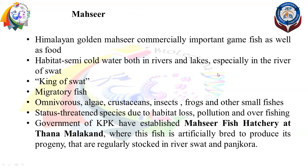Mahseer — Himalayan Golden Mahseer — is the national fish of Pakistan. It is a commercially important game fish as well as a food fish. Its habitat is semi-cold water in both rivers and lakes. In Pakistan's aquaculture, Mahseer plays an important role. It is found in the rivers of Swat.